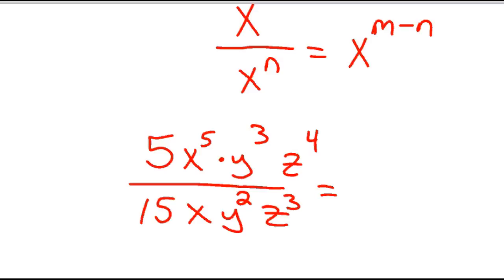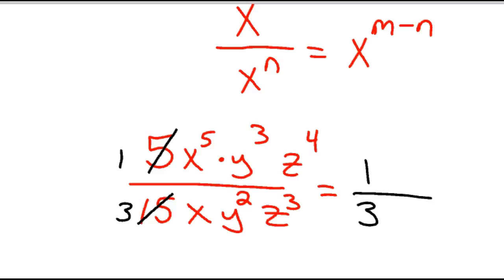To simplify this: 5 and 15 give us 1 and 3, so we have 1 third remaining. This x is x to the 1st, so x to the 5th divided by x to the 1st gives x to the 4th power.